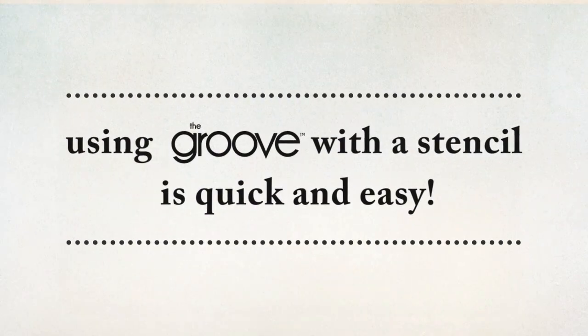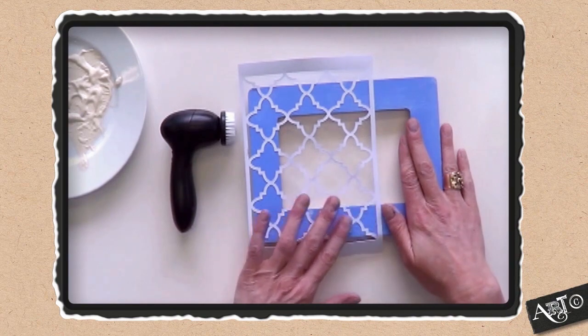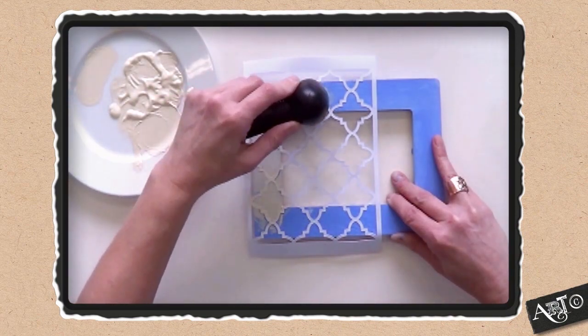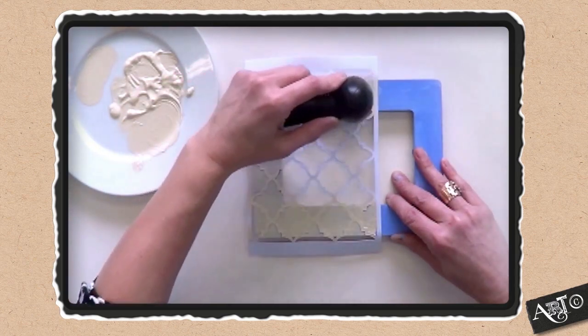Using the Groove tool with the stencil is quick and easy. Simply position the stencil and apply paint to the brush tip. Swirl over the surface of the stencil. Move your stencil and repeat until the entire surface is stenciled.